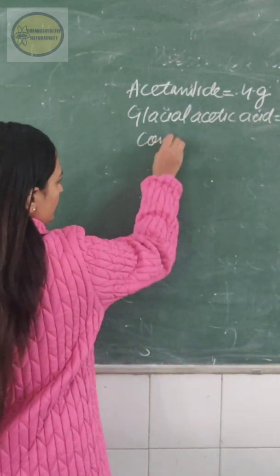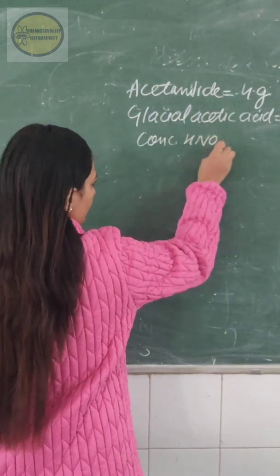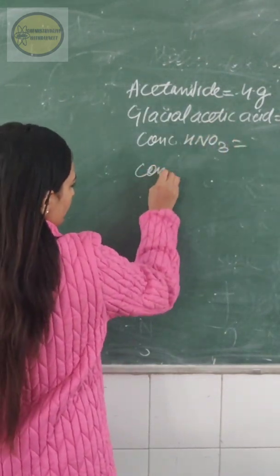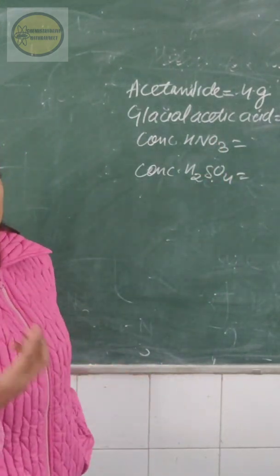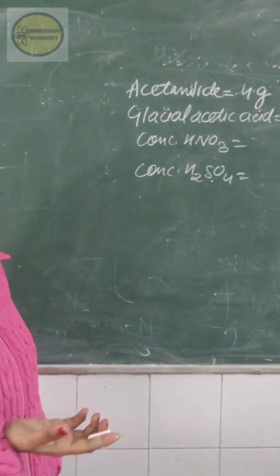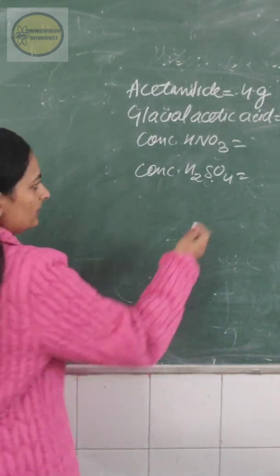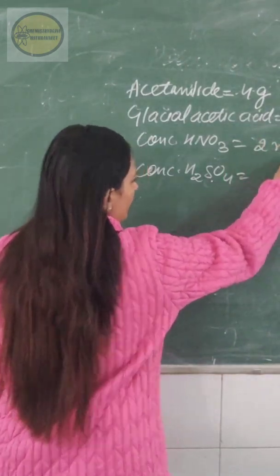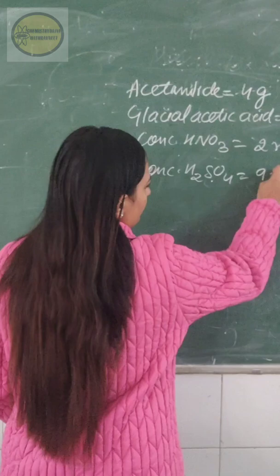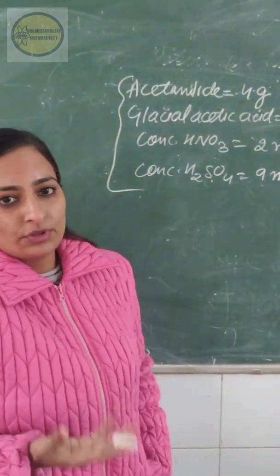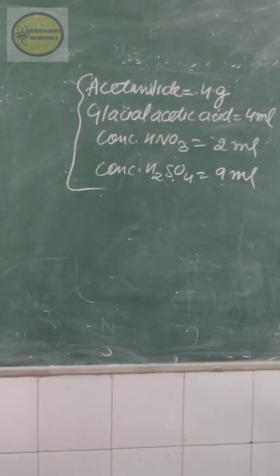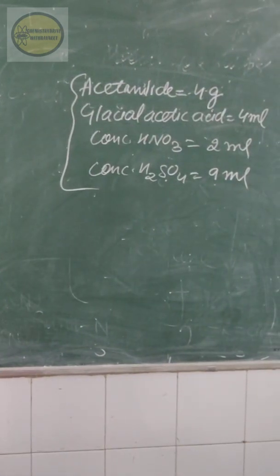Then your concentrated nitric acid. Concentrated sulfuric acid. So together we will make the nitrating mixture. So the amount of concentrated nitric acid which you will require is 2 ml, and your sulfuric acid is 9 ml. So these are the chemical requirements for this preparation.